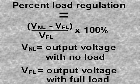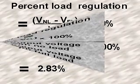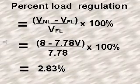For example, a certain regulator has a no load output voltage of 8 volts and a full load output of 7.78 volts. What is the percent load regulation? The percent load regulation is equal to the voltage at no load minus the voltage at full load divided by the voltage at full load times 100% or 2.83%.